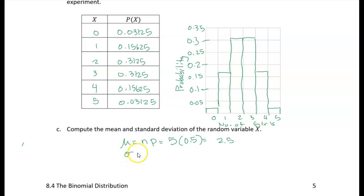All right, the standard deviation is just going to be the square root of npq. So the square root of five times 0.5 times 0.5. And the square root of all of that is 1.11.